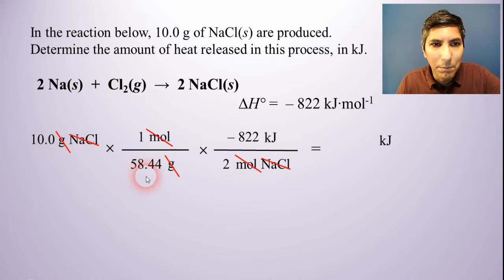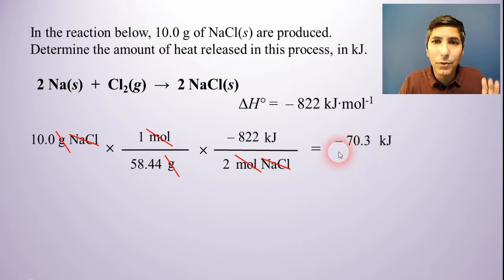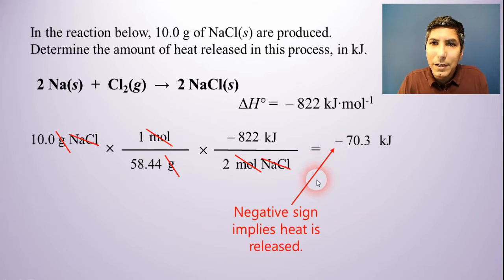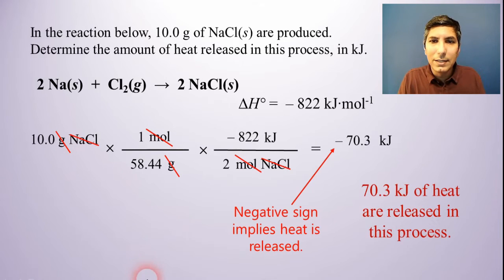I just take 10.0 divided by 58.44 times -822 divided by 2, and the answer I get is -70.3 kilojoules. Now the negative right there implies that this is exothermic, that I'm actually releasing heat over the course of this process. What this is telling me is that if I take 10 grams of sodium chloride and produce that in this process, I'm going to release 70.3 kilojoules of heat energy.